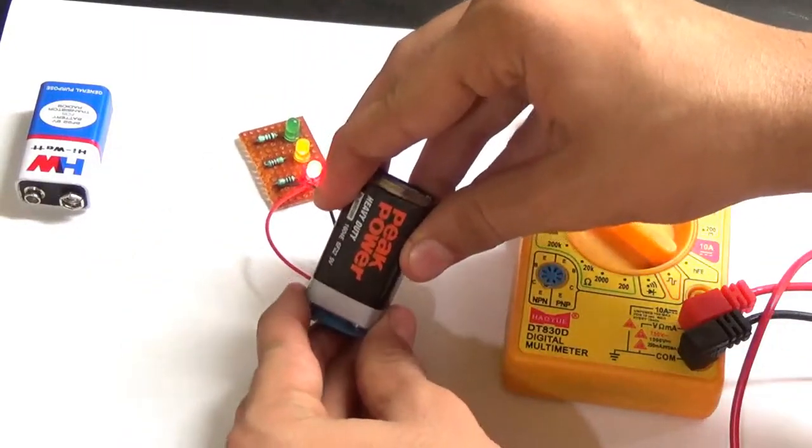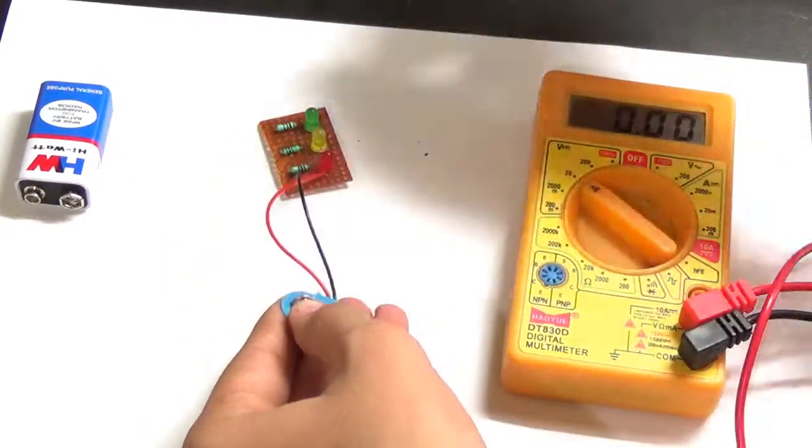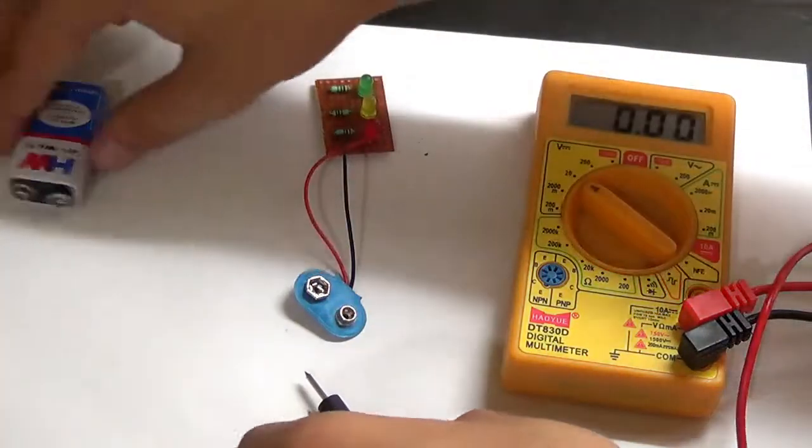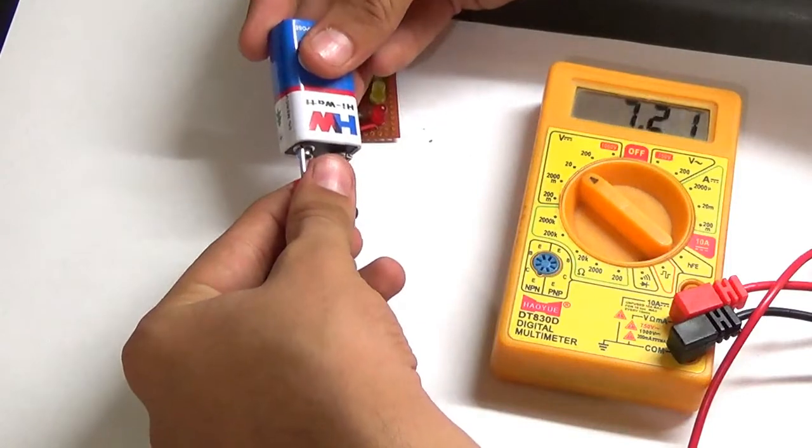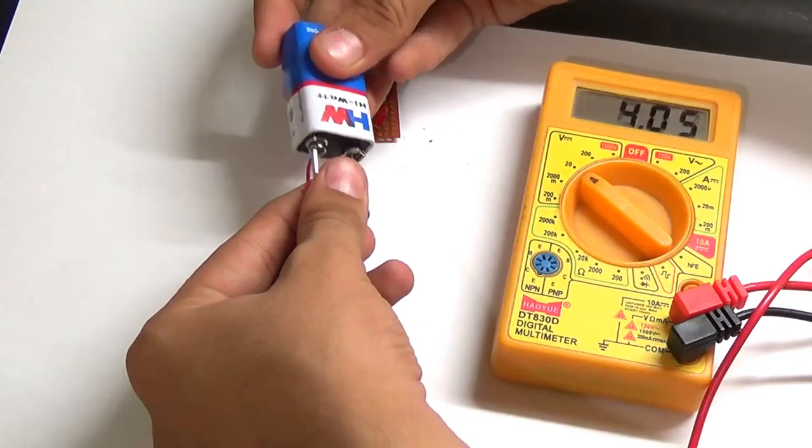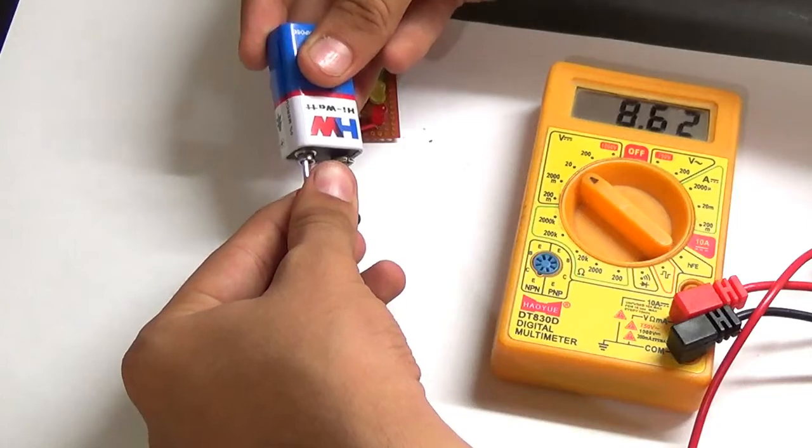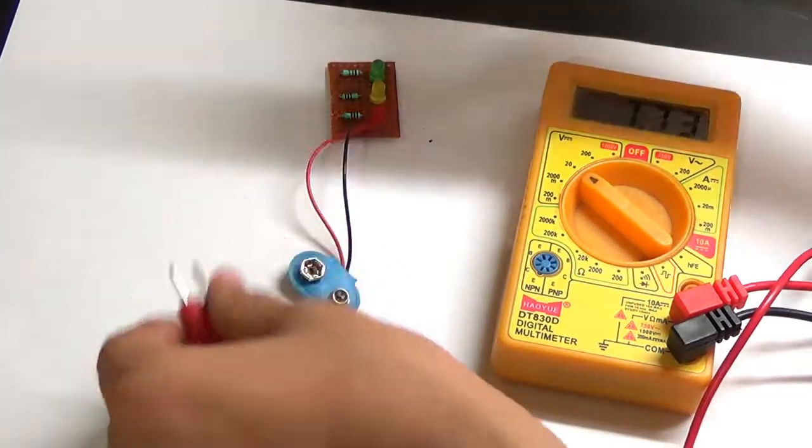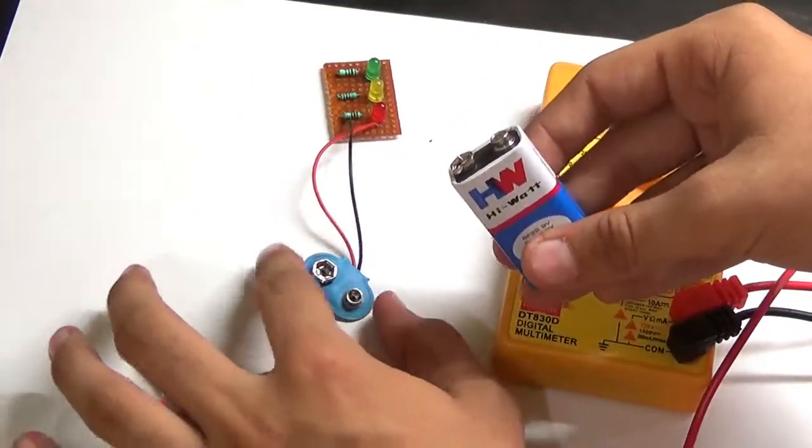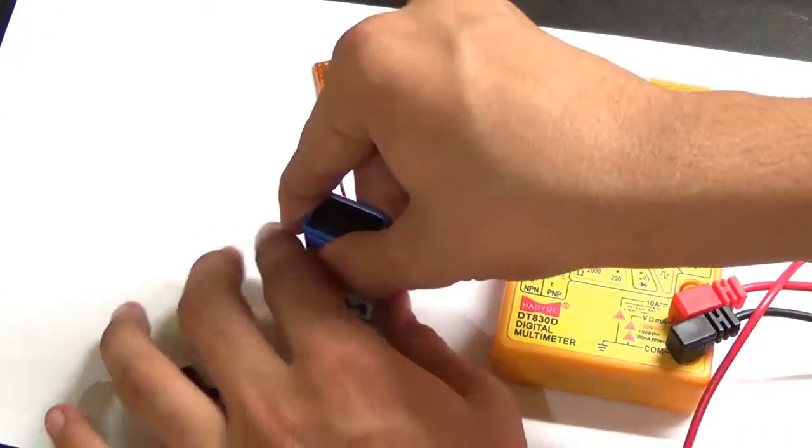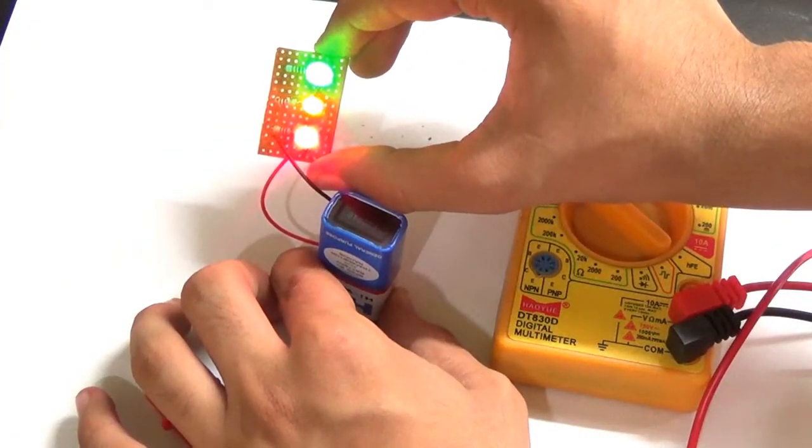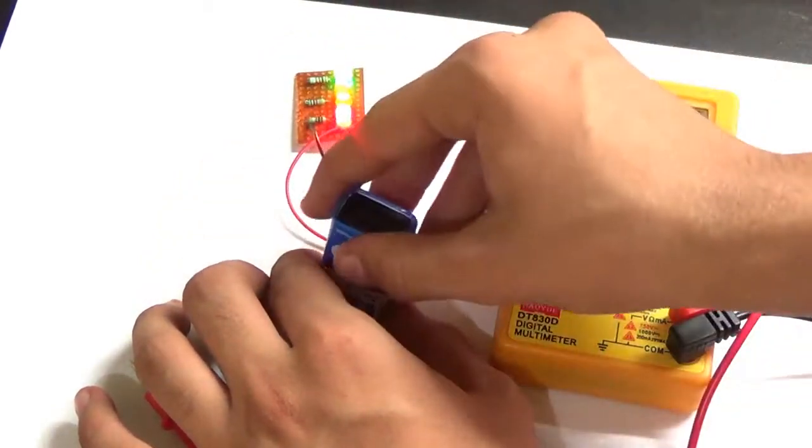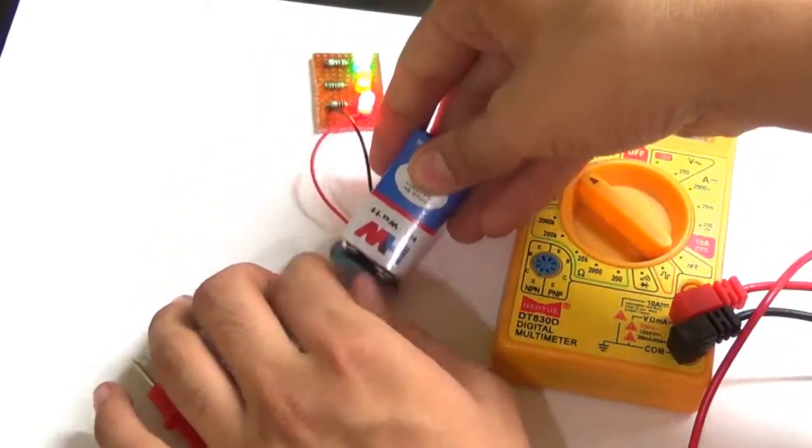Now let's test the second battery. It's measuring 8.62 volts. And now let's connect to our module. As you can see, all the lights have lit up, so that means this is totally full and nice for use.